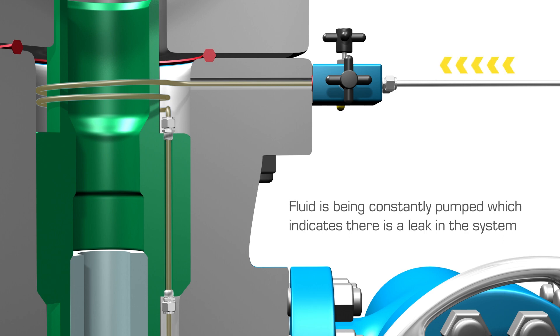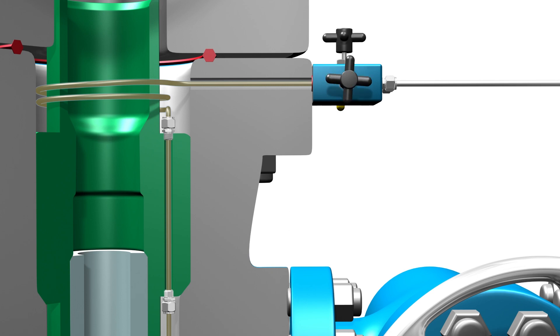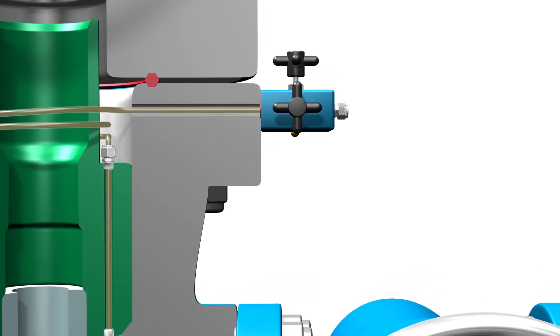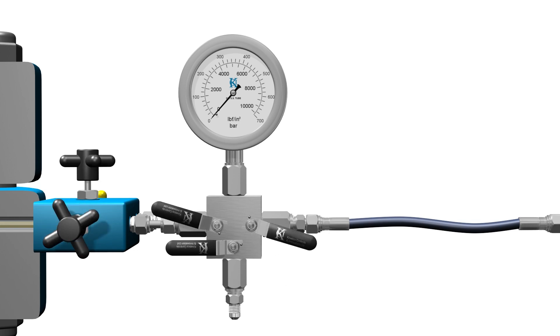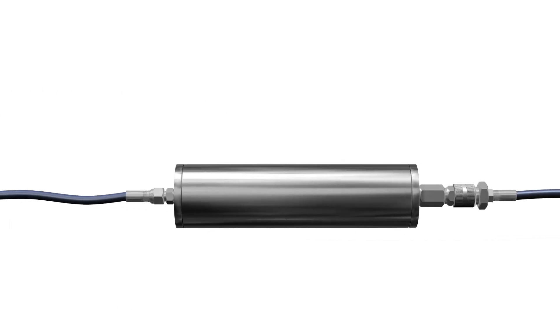Here we show the platform operating fluid being constantly pumped which indicates there is a leak in the system. Isolate, bleed and disconnect the platform feed line and install the KCI specialized tooling and carry out an evaluation by pumping test fluid into the system.